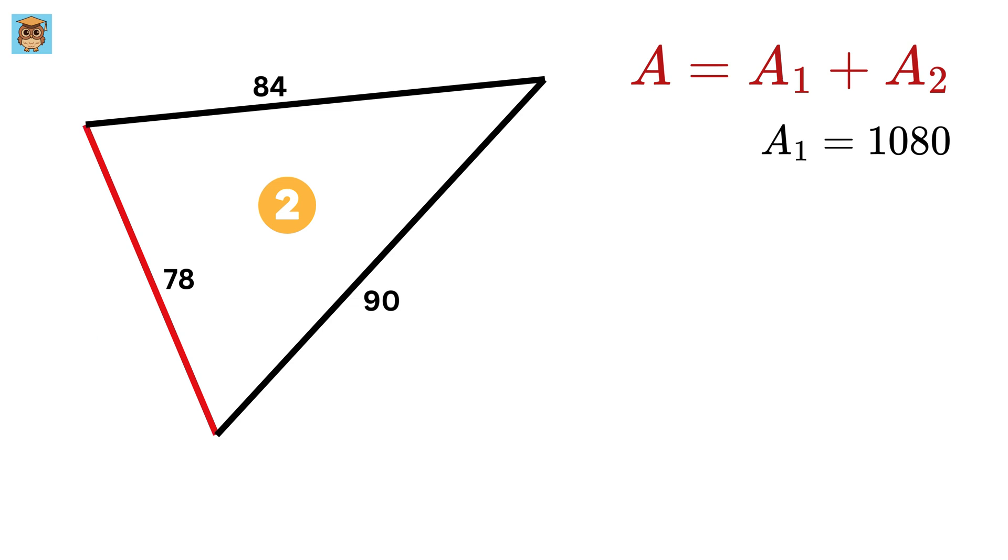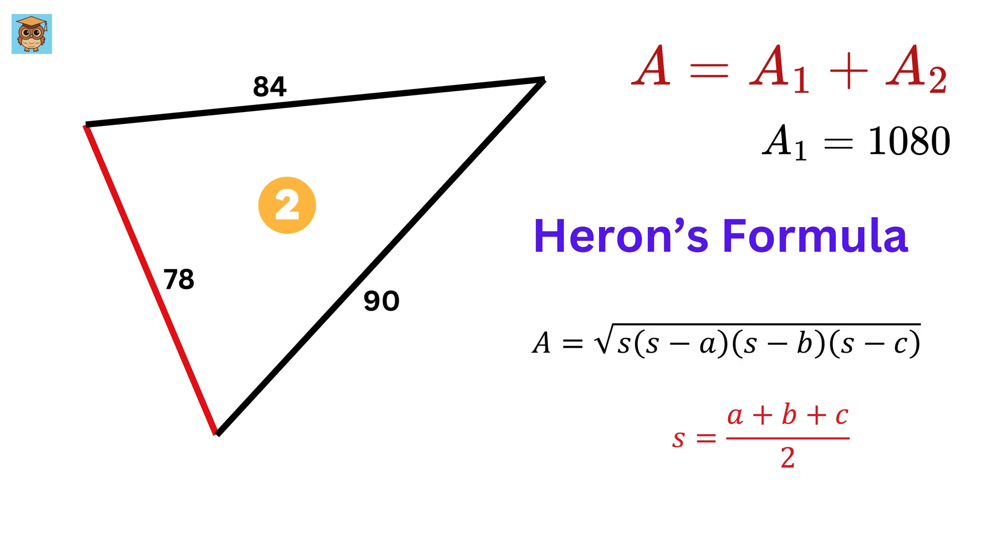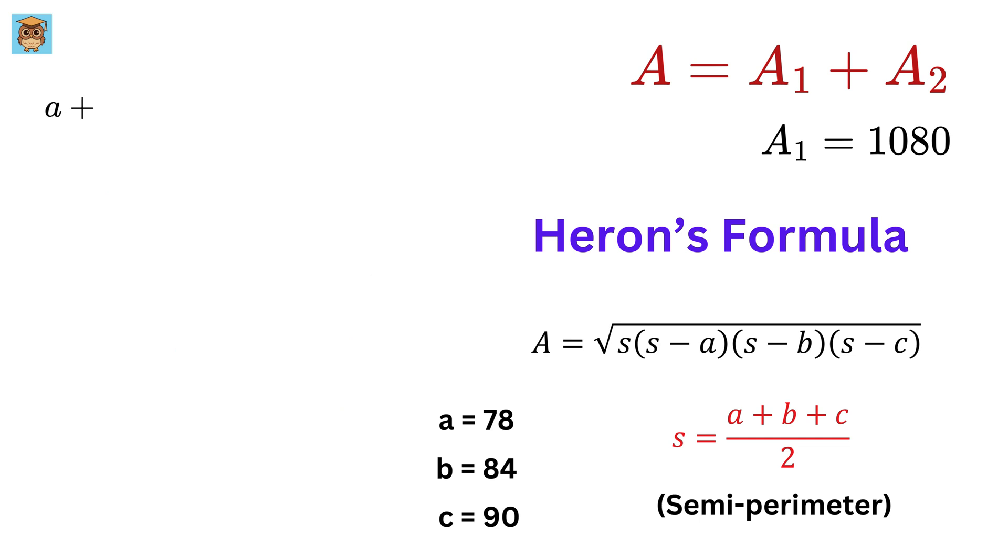Now we just have to find the area of this triangle 2 and we are done. We know all three sides of this triangle, so how can we find its area? We will use Heron's formula, which looks like this, where s is the semi-perimeter and a, b, and c are the sides of this triangle. Now for this triangle 2, let a equals 78, b equals 84, and c equals 90 units. So a plus b plus c equals 78 plus 84 plus 90 or 252, and thus the semi-perimeter will be 252 over 2 or 126.